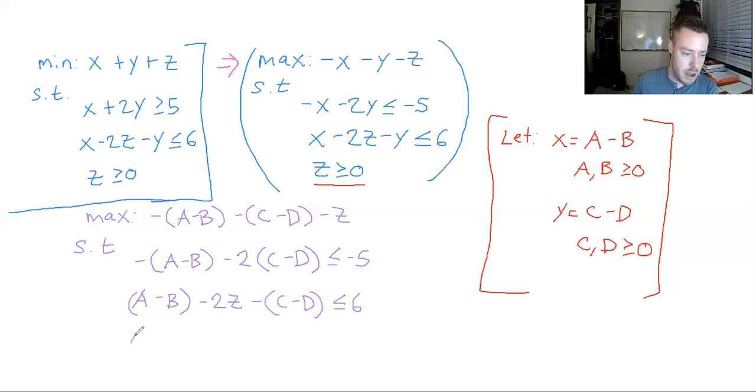Now, where we have A, B, C, D, and z are all greater than or equal to zero. So this is going to be our final form. This right here is going to be our final form.